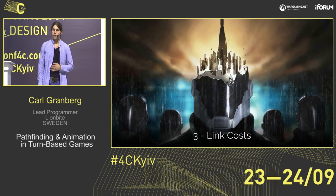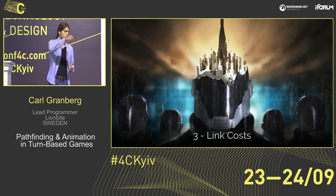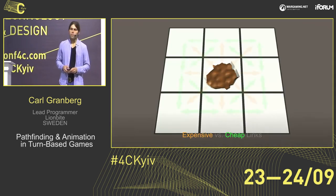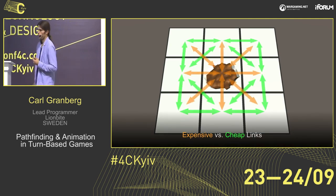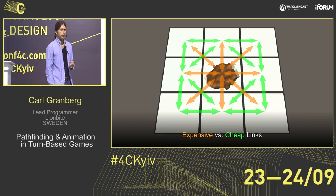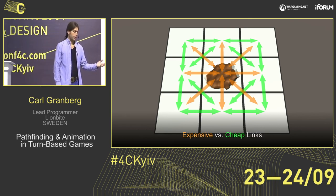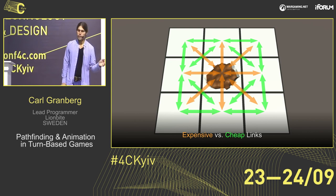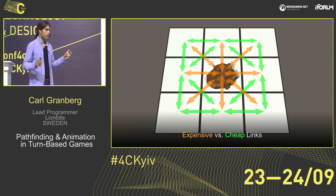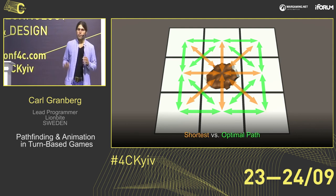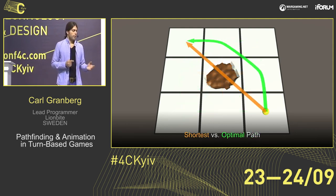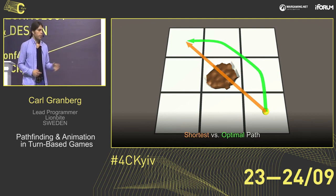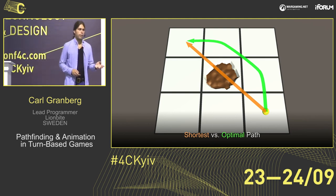Link costs — this is the cost to go from one tile on the map to another. It's not always that we want to find the shortest path. Sometimes we want to avoid expensive tiles like a muddy hole. All the links leading into this hole are marked as expensive. So when we feed expensive links to the algorithm, it's going to find not the shortest path but the optimal path — the one with the least total cost to get from the start to the finish.